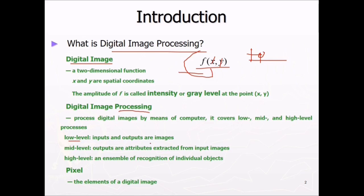Low level means the inputs and outputs are images. Mid level means the outputs are attributes which is extracted from input images. These are the information which can be extracted from the input images. And high level means an assemble of recognition of individual objects. If there is an automated procedure or a semi-automated procedure then humankind will be benefited.